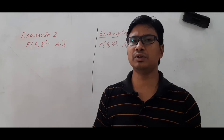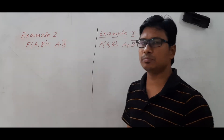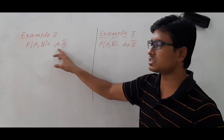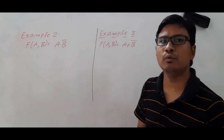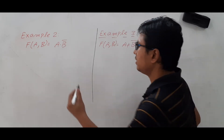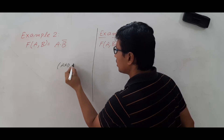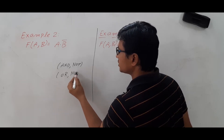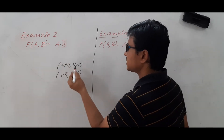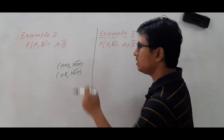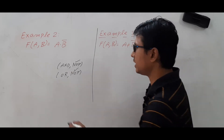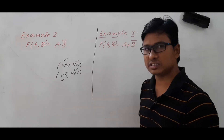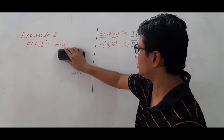Let me take Example 2: a function f(a, b) where you have two boolean variables a and b, and the function is given as a AND b-complement. Now, when can I say a function is functionally complete? Either {AND, NOT} is functionally complete, or {OR, NOT} is functionally complete. From this expression, I first need to find NOT, because both sets have the NOT operation, and then find either AND or OR.